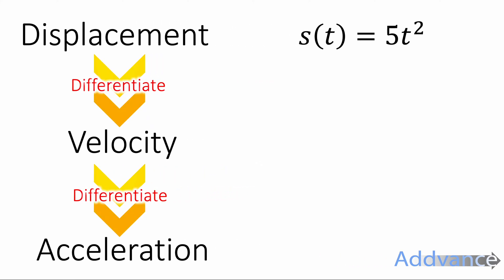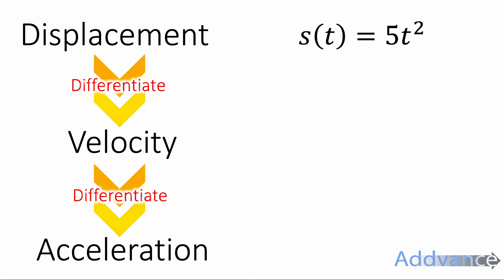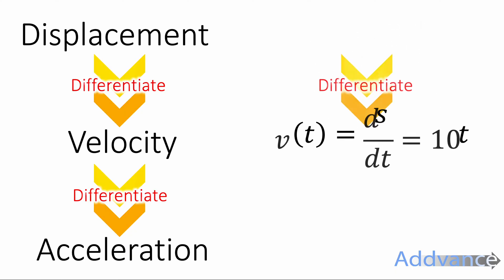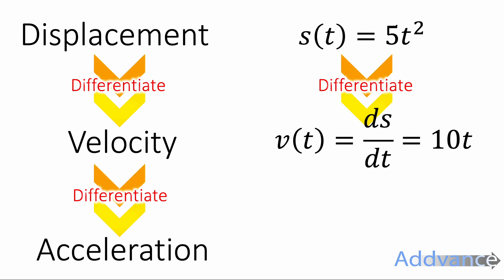So let's look at an example. Let's say s(t) = 5t². S(t) is our notation for displacement — s is the symbol for displacement and it's written as a function of time t. So s(t) = 5t² differentiates to give v(t) = 10t. Differentiating displacement gives us the velocity.